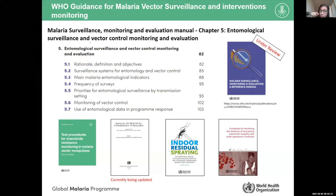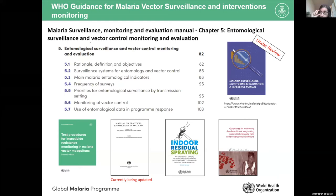In this document there is a list of indicators and instructions on how to plan and implement entomological surveillance. The indicators chapter is currently being reviewed. What I will present in the next slides is a working process — not a finalized version, but a summary of the revised indicators and their usefulness for programmatic decision making.